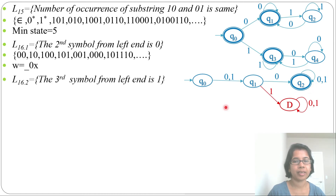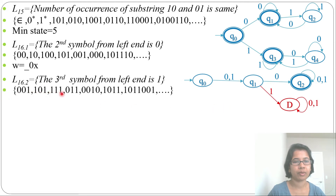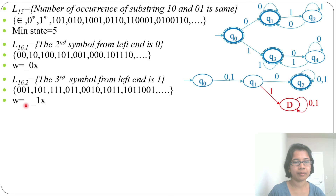The next language: the third symbol from the left end is 1. It accepts strings like '001', '011', '101', '111', '0010', '0101', '1011', '1101', and so on — wherever the third character is 1. We can write W as: first place can be 0 or 1, second place can be 0 or 1, third place is 1 (fixed), then after that it can be anything. Let's design the DFA.